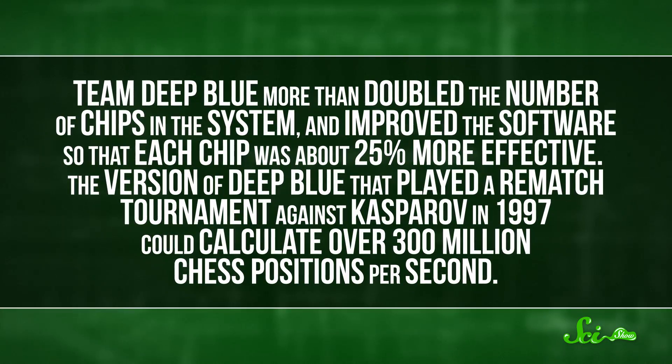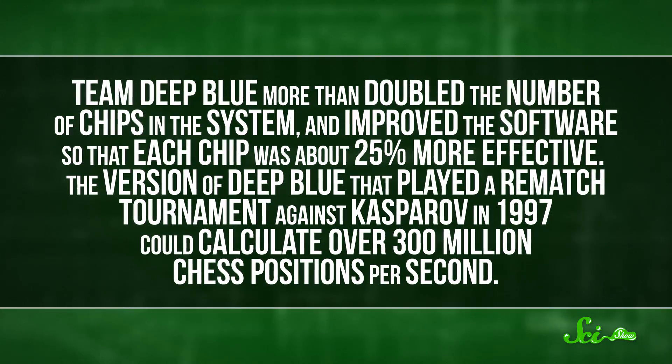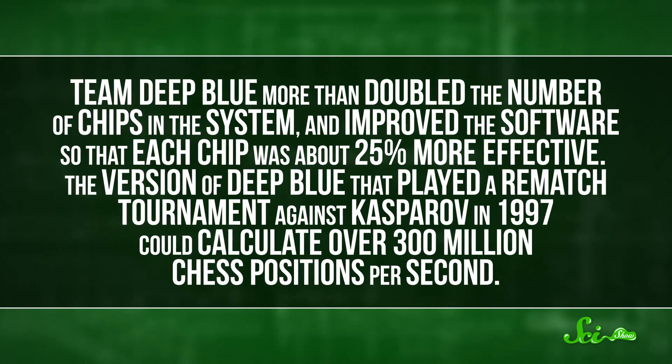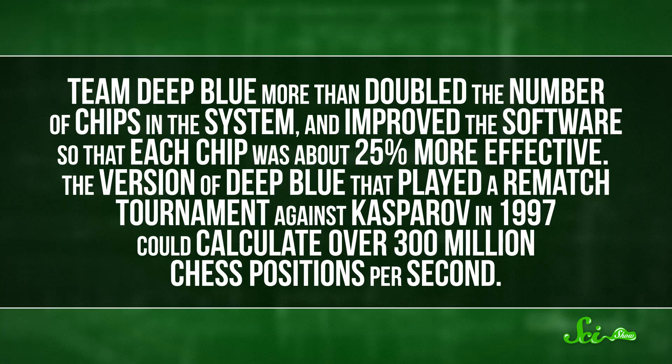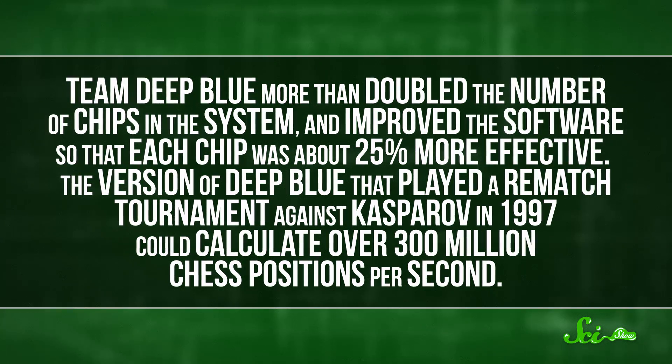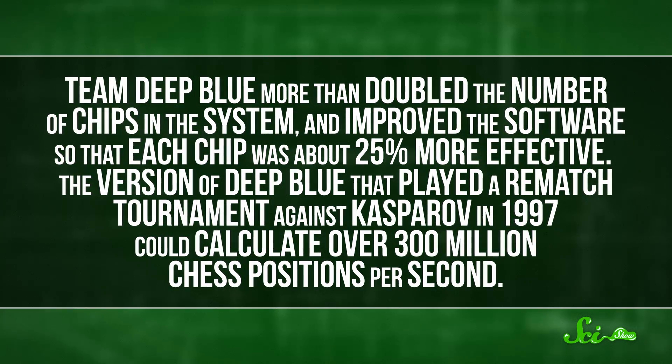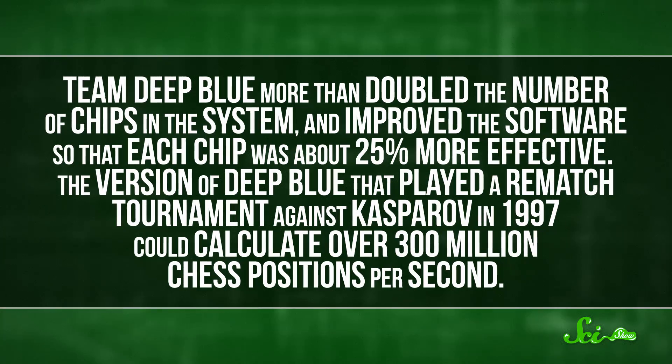Calculating the outcomes of 100 million chess positions per second was not enough to beat the human world champion of chess. So Team Deep Blue more than doubled the number of chips in the system, and improved the software so that each chip was about 25% more effective. The version of Deep Blue that played a rematch tournament against Kasparov in 1997 could calculate over 300 million chess positions per second. And then, it won.